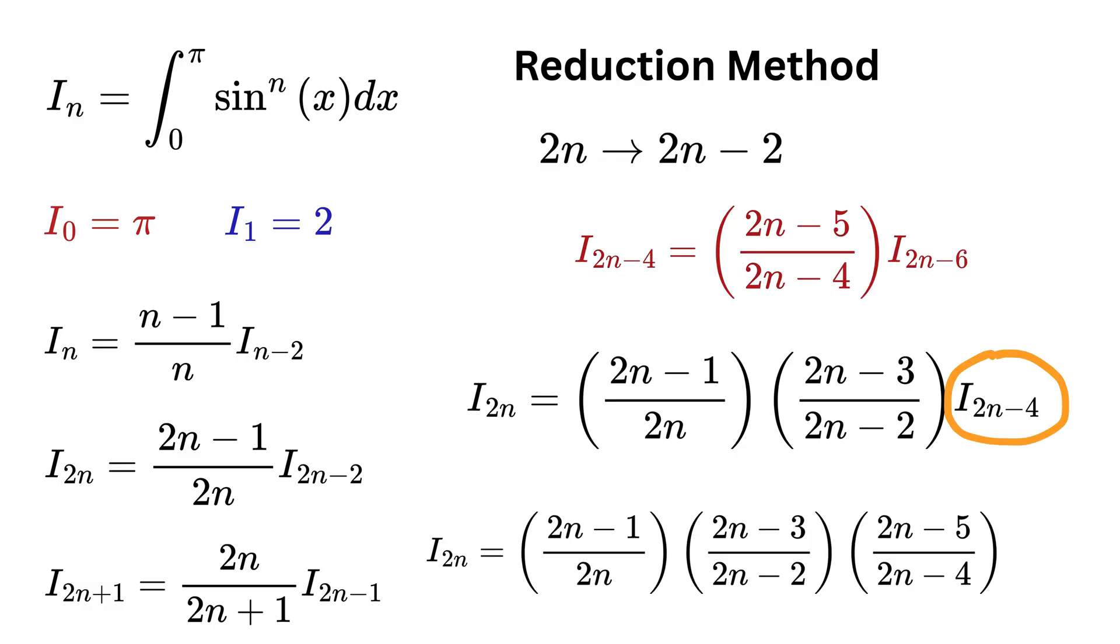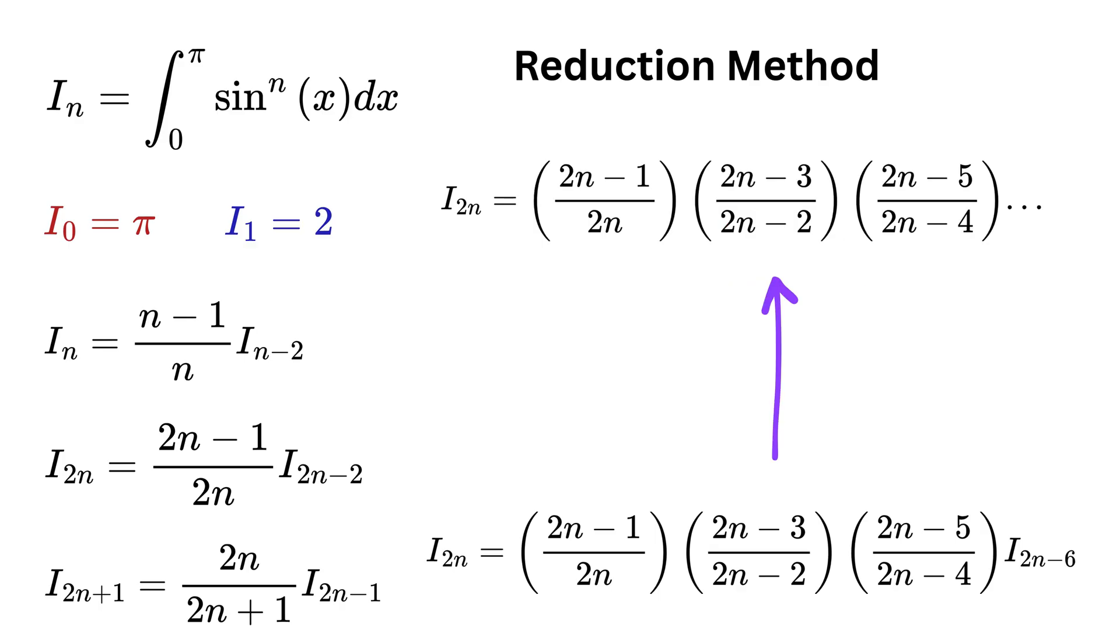Similarly, this can be reduced to (2n-5)/(2n-4) times I_(2n-6), right? So we will continue this all the way down till we reach I_0, which is nothing but pi.